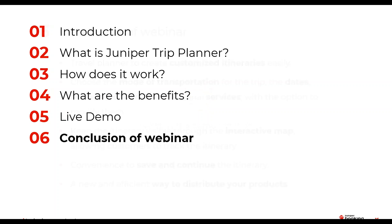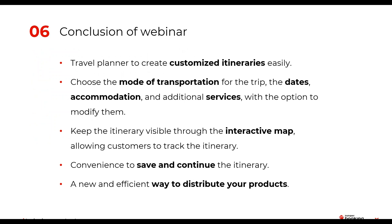We will start with the conclusion of the webinar. The Juniper Trip Planner is a travel itinerary builder that will allow your customers to create personalized itineraries in a simple way. Your customers will be able to choose the transportation, travel dates, accommodation, and additional services, with the option to modify the selection. The system keeps the itinerary visible through the interactive map, helping your customers to follow their trip. The option to save and continue the itinerary will provide convenience, and you will increase your competitiveness and sales by offering a new and efficient way to distribute your product, as this modern interface is in line with current tourism trends.